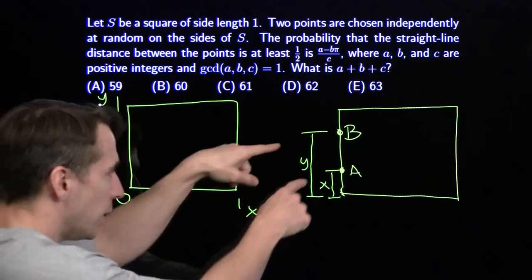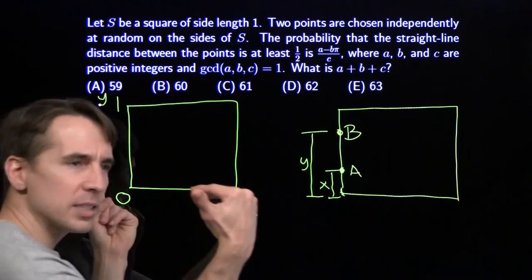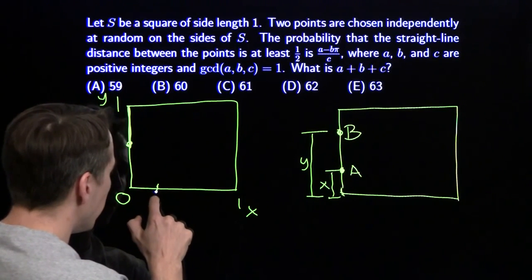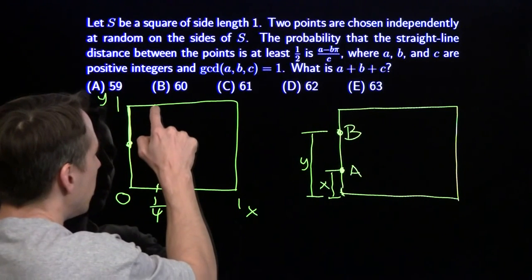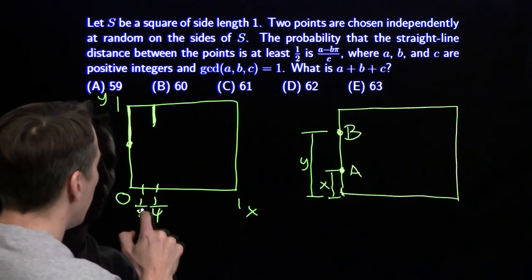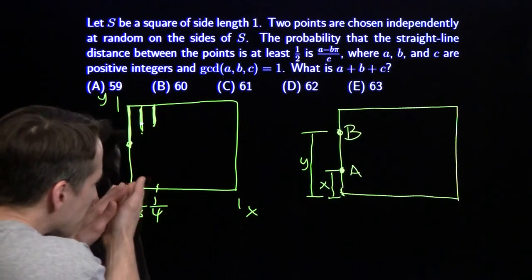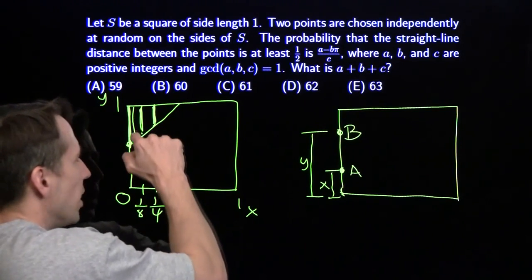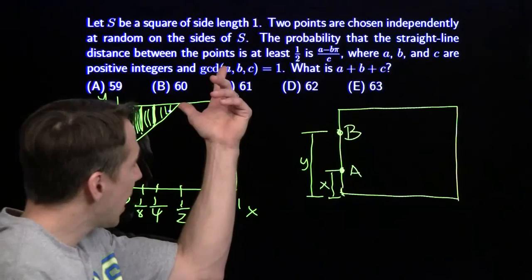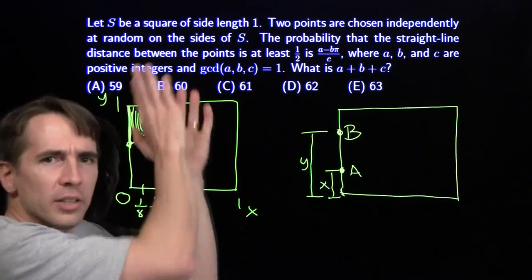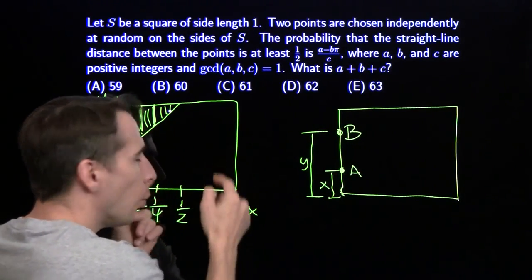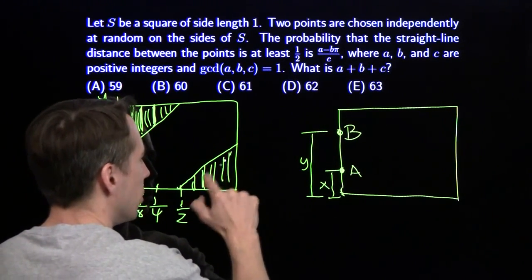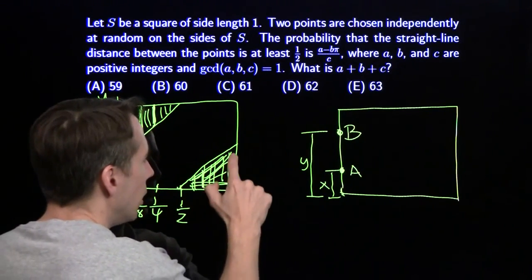Now we're going to draw a picture of the successes — when x and y are at least a half apart. If x is zero, then y has to be greater than or equal to a half. If x is a quarter, then y can be anything from three quarters up. If x is one eighth, y can be anything from five eighths up. As we increase x from zero up to a half, that minimum possible value for y goes from one half all the way up to one. As long as y is above this line, the distance between x and y is at least a half. Then when x hits a half and goes higher, low values of y work. As x goes from one half up to one, the maximum value for y goes from zero up to a half. So these are the successful regions.